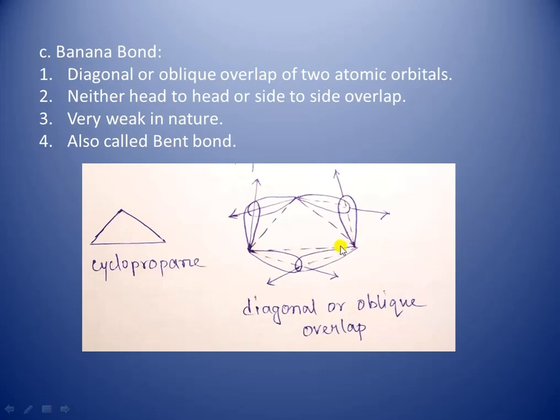It is generally found in strained organic compounds like cyclopropane, oxirane, etc. Here you can see the image of cyclopropane and this is the banana bond which I have discussed.